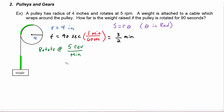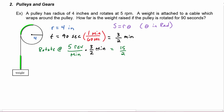So if we come down to our rotation, we're rotating at five revolutions per minute and we're rotating for three-halves of a minute. If we multiply those two together, we get 15 over 2 — five times three is 15 over 2 — and the minutes cancel, so our units are revolutions.